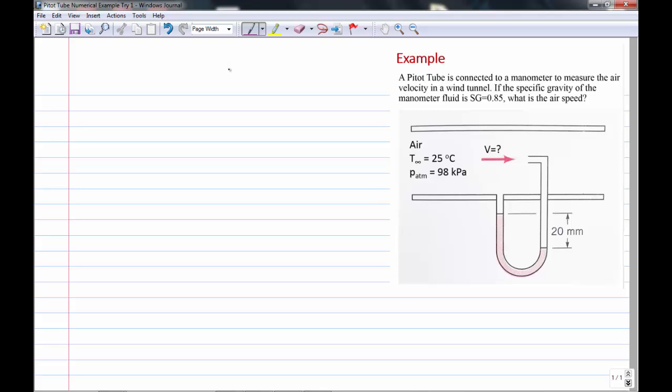So you've got, you can see in the diagram that you've got a 20 millimeter deflection of the manometer. And you're told in the problem statement diagram that it's air at 25 degrees C and atmospheric pressure is 98 kilopascals. And we're after calculating the air velocity here.